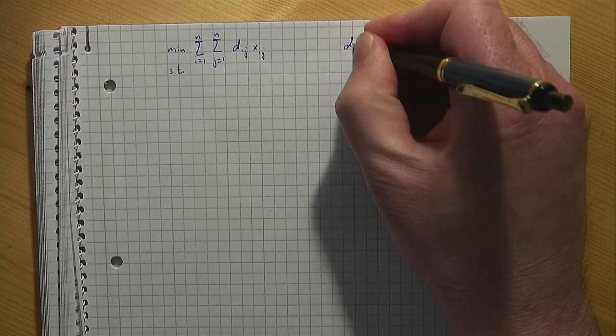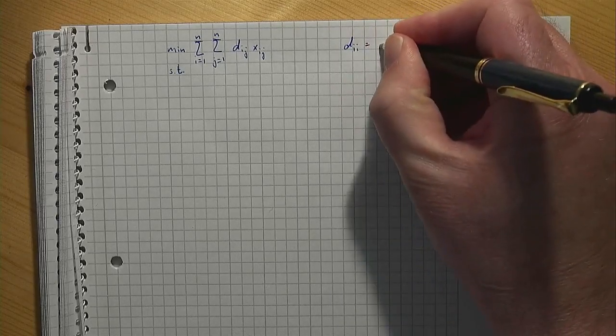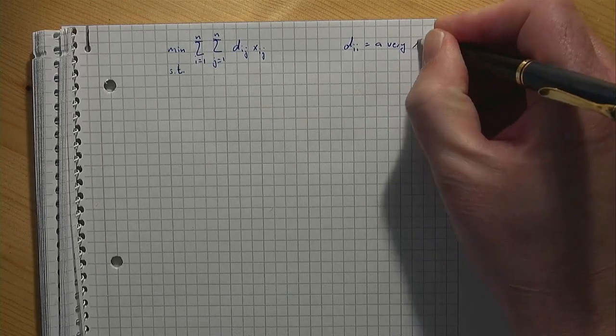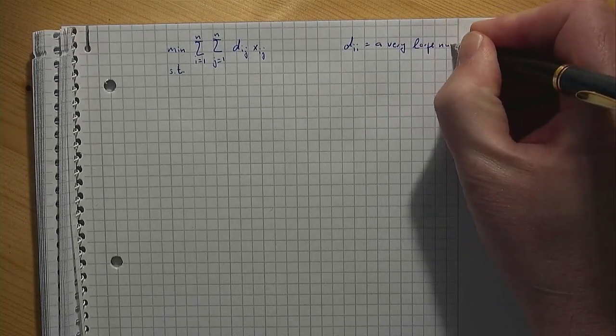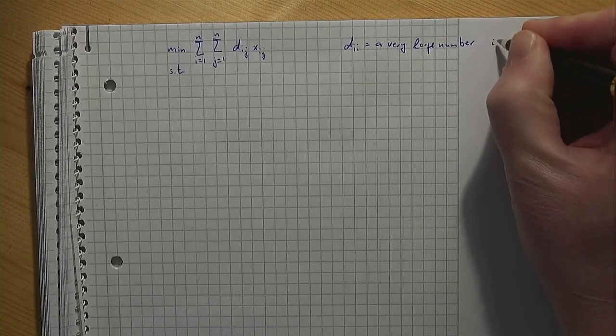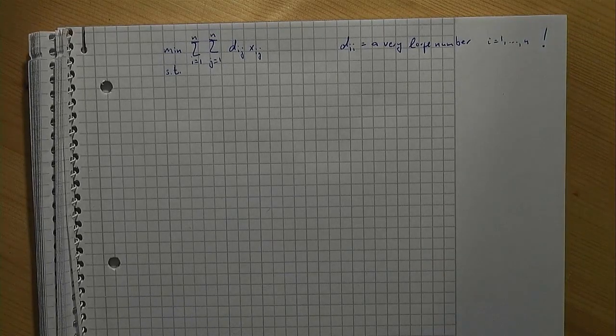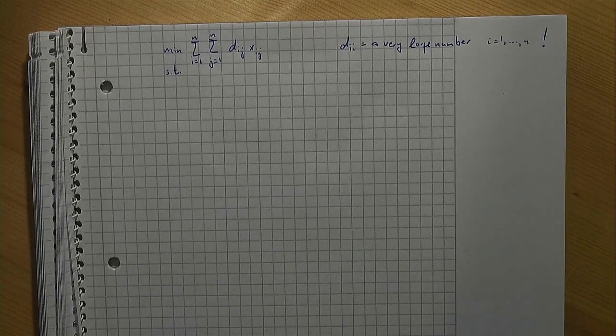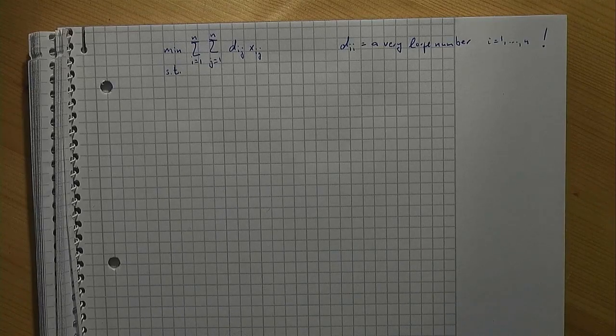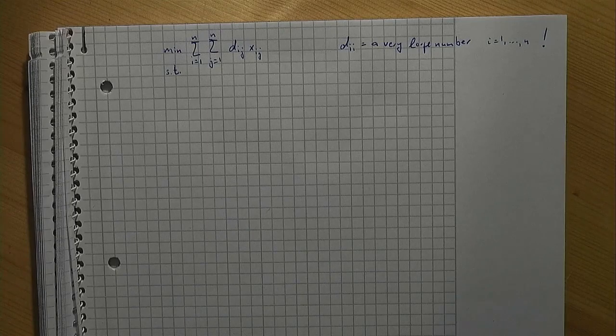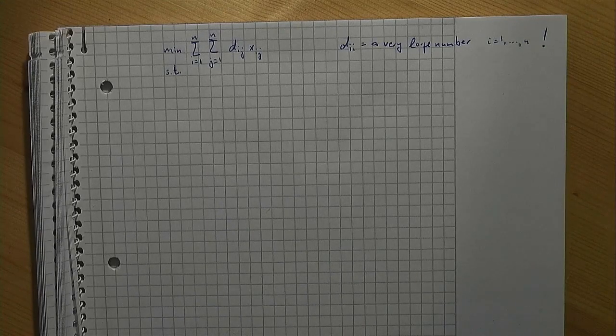It will turn out to be convenient to define the distance from a location i to itself to be a very large number. That is, dii is a very large number. This may surprise you, because it would be straightforward to have dii equal to 0. Doing as we do is a modeling trick that makes life easier.